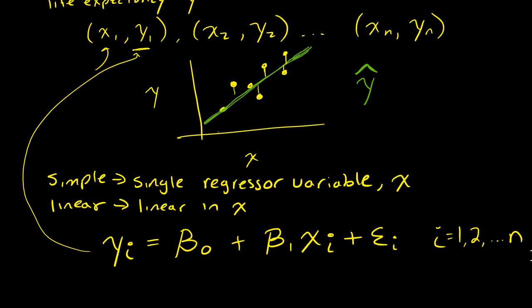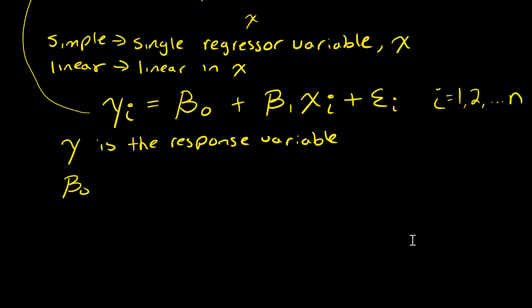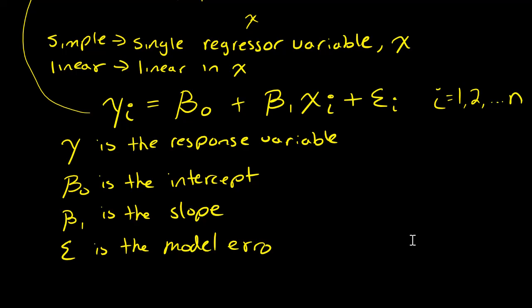All right, so Y is our response variable, the response variable. Beta zero is the intercept. Beta one is the slope. And epsilon is the model error.